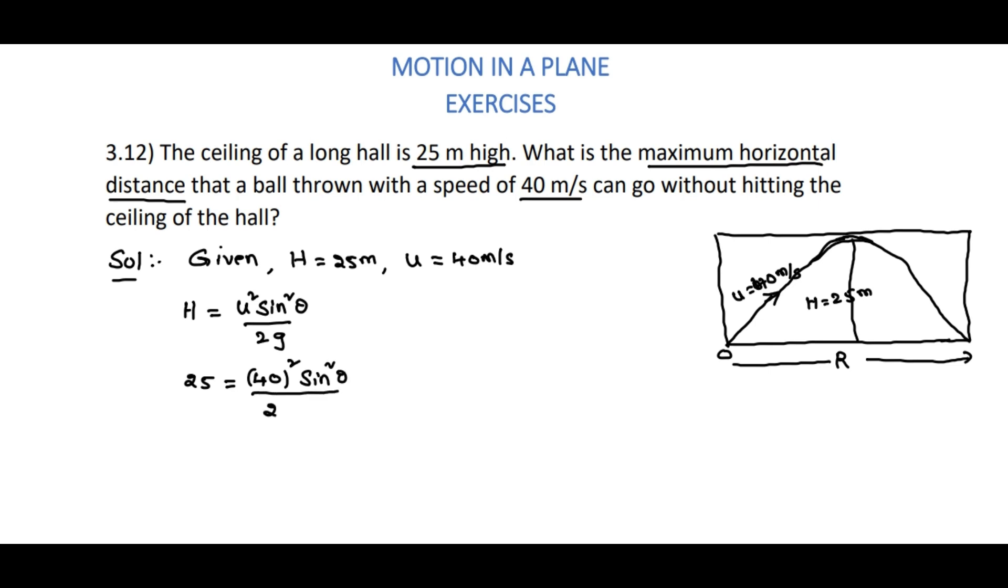sin²θ equals 25 times 2 times 9.8 divided by 40 squared. This value is equal to 0.306. And from this, sin θ is equal to the square root of 0.306, which will be nearly 0.554.